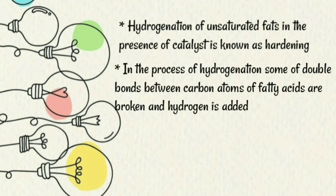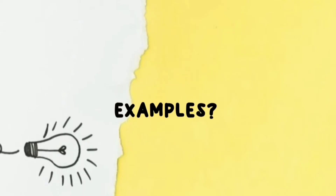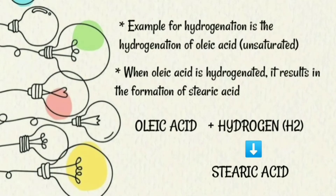Next topic: examples of hydrogenation. An example is the hydrogenation of oleic acid. Oleic acid is an unsaturated fatty acid. When oleic acid is hydrogenated, it results in the formation of stearic acid. Stearic acid is a saturated fatty acid. So: oleic acid plus hydrogen gives stearic acid.